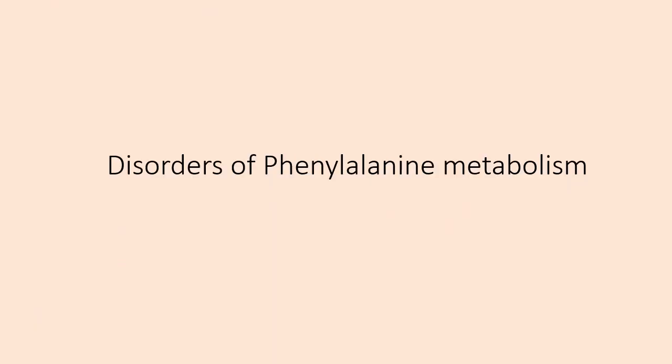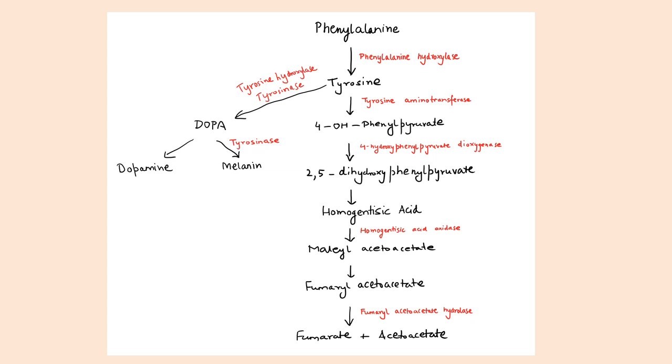The next topic is disorders of phenylalanine metabolism. If you look at last four papers of NEET, there was a question from these. So this is the phenylalanine metabolism. Phenylalanine is converted into tyrosine through various intermediates. Ultimately it is broken down into fumarate plus acetoacetate. Tyrosine is also responsible for formation of dopamine and melanin.